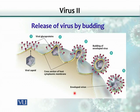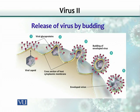Some viruses acquire an extra membrane, which we call the envelope. As you can see, this virus has been assembled in the host cell and is about to be released. These spikes — viral encoded proteins — insert themselves into the host cell membrane. As the virus approaches the cell membrane, it becomes covered by these spikes, which fully cover the capsid. This becomes an enveloped virus, and these viruses are released by budding.